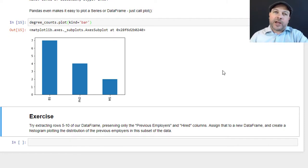Alright, if you want to practice this for yourself, I have a challenge for you. Get your hands dirty here and get a little bit of hands-on experience. Try extracting rows five through ten of that source data frame, and I want you to preserve only the previous employers and the hired columns. Assign that to a new data frame object, and then create a histogram like we just did here, plotting the distribution of the number of previous employers within just that subset of the data. That should allow you to sort of put together all the stuff we talked about here. There's a lot more to pandas than this obviously, but these are the most common operations you'll need to deal with, and pretty much everything you need to know to get through this course. So have a crack at that exercise, and with that under your belt, we can move on to some actual data science.